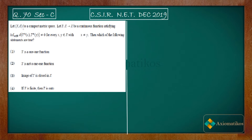Let X,D be a compact metric space and let T: X → X be a continuous function satisfying the following property: the infimum over n belonging to the natural numbers of the distance between T^n(x) and T^n(y) is non-zero for every x,y belonging to X with x ≠ y.